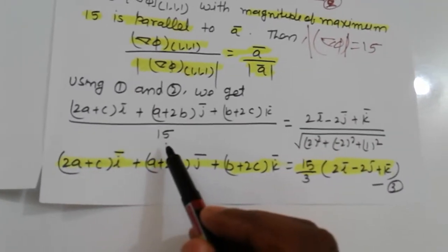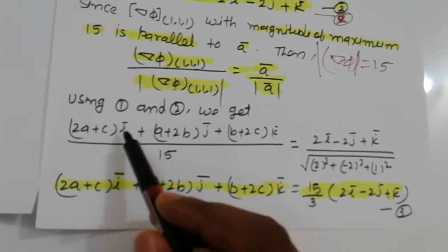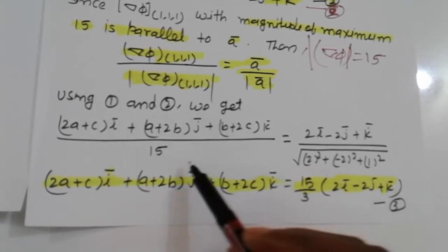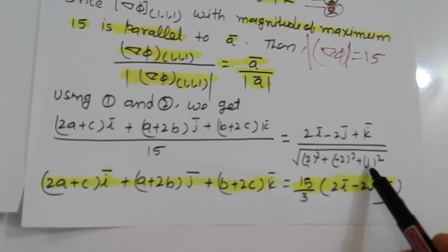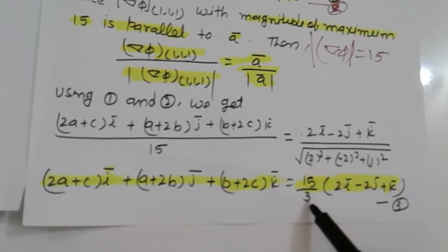Here multiply 15 cross numerator and here 4 plus 4 plus 1 equals 9, square root is 3.